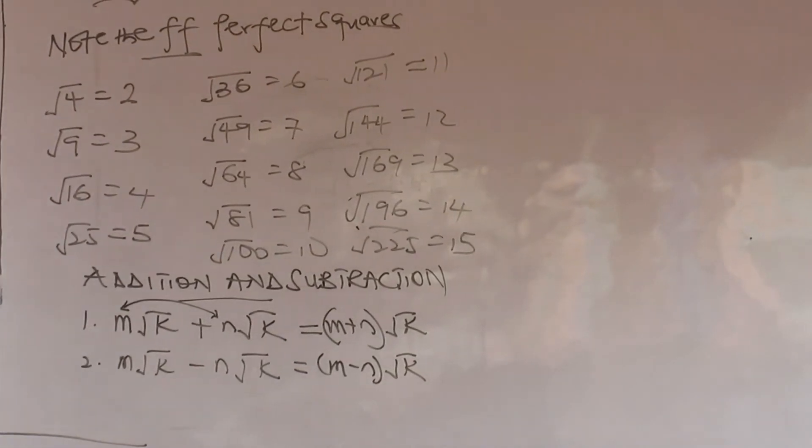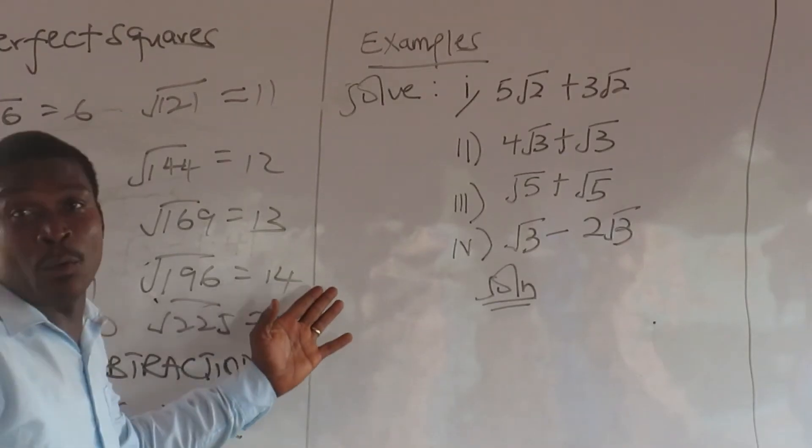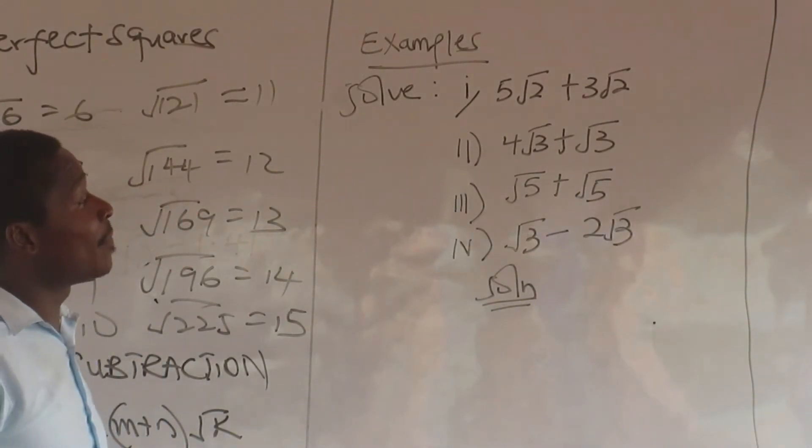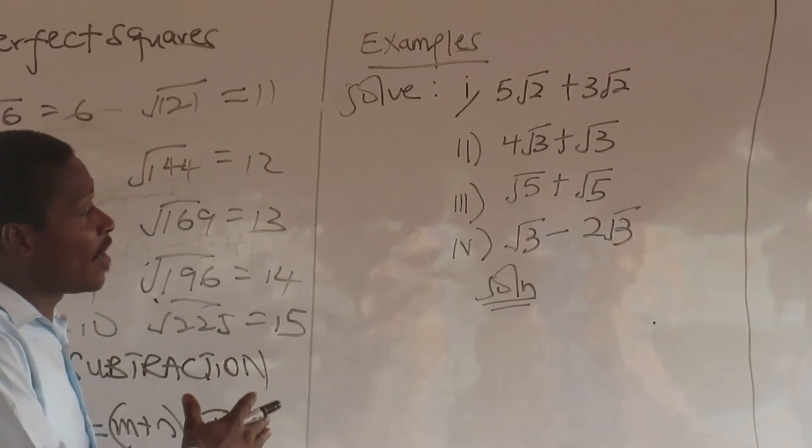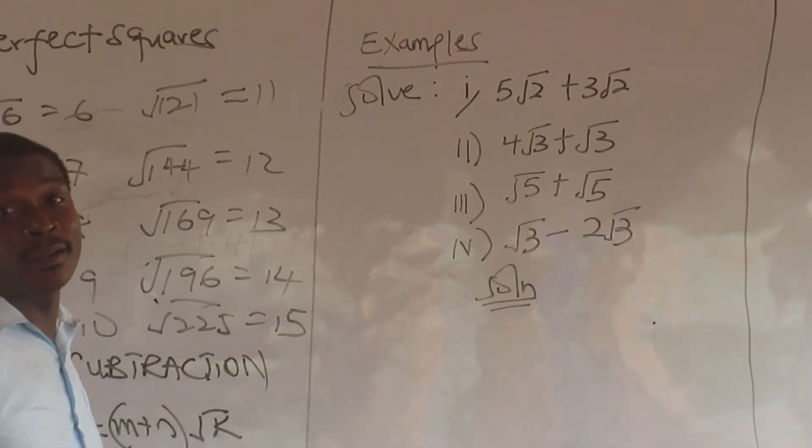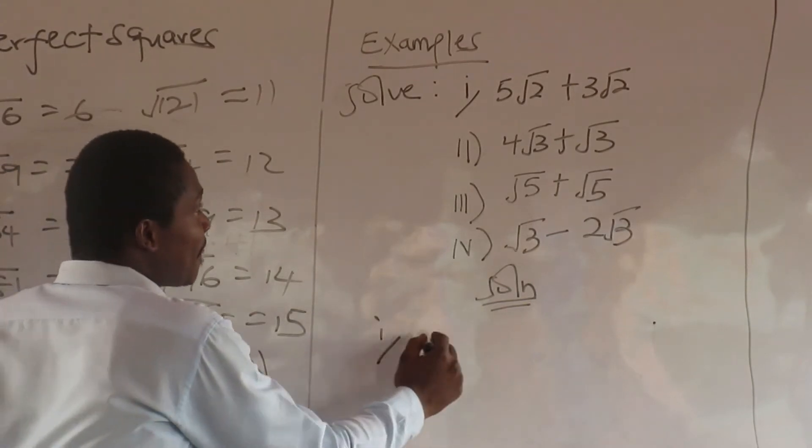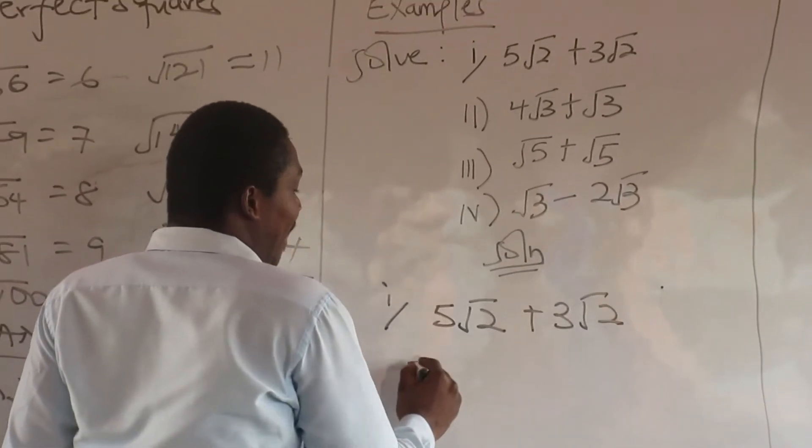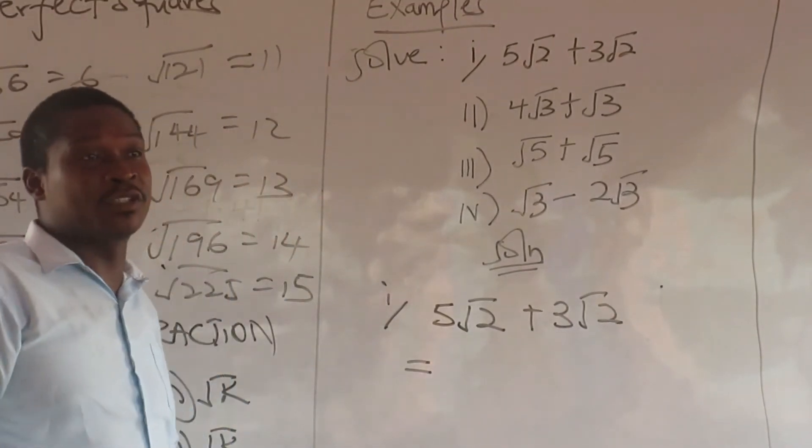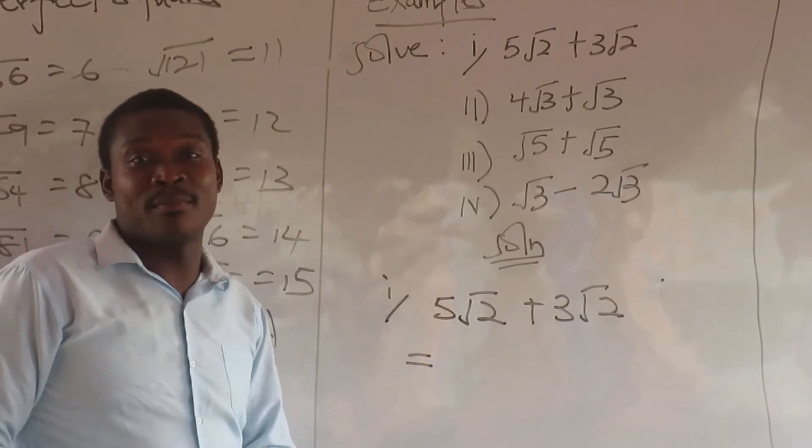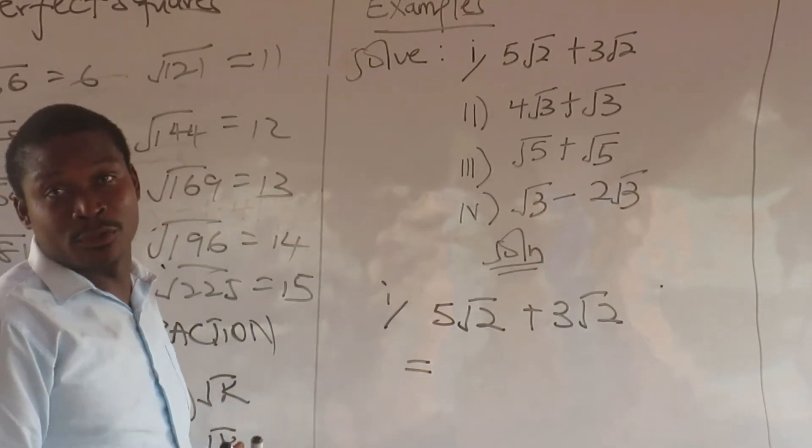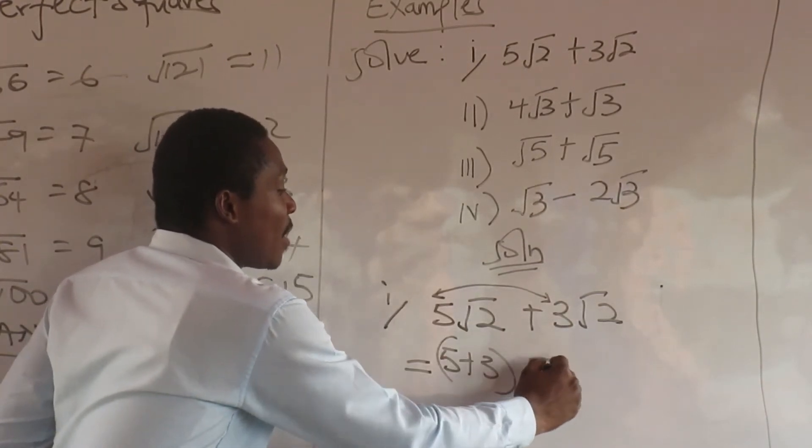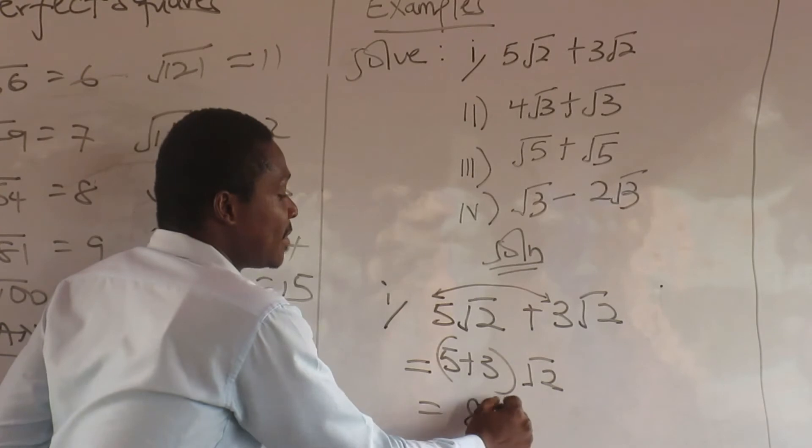Now let's see some examples. So these are the examples that we want to look at: 5 root 2 plus 3 root 2, 4 root 3 plus root 3, root 5 plus root 5, root 3 minus 2 root 3. That is 5 root 2 plus 3 root 2. Before I add any form of surds, I have to check whether the elements in the roots are the same. If they are the same, then they are compatible. So I put those outside together and just factor one. So that's going to give me 8 root 2.